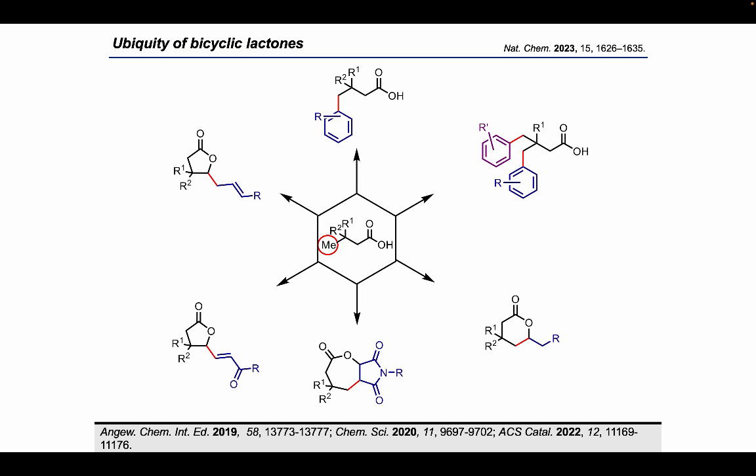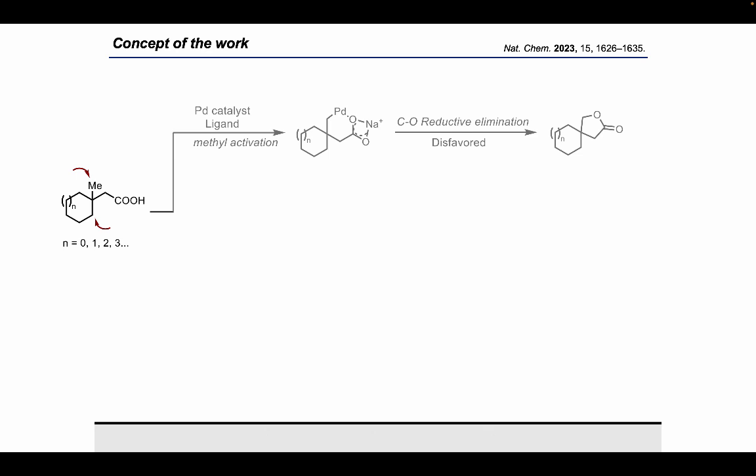However, in these cases I always had to rely on the activation of the terminal methyl group for forming these products. In order to access other products, one needs to look at other groups present in the molecule, like a methylene group or a methine group. But conventional knowledge suggests that activation of a methylene in an aliphatic compound is much more challenging than a methyl group due to steric hindrance. So, in order to overcome this challenge, we thought about designing suitable substrates and suitable ligands. We synthesized a simpler-looking acid: cyclohexane-3-acetic acid.